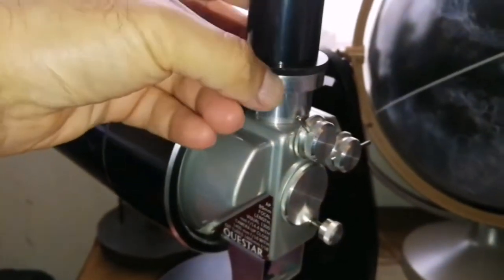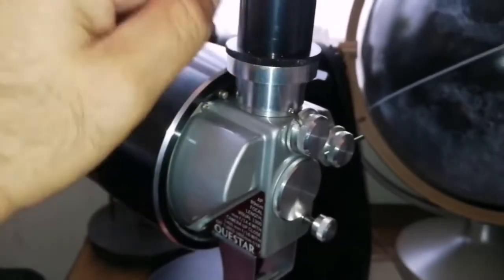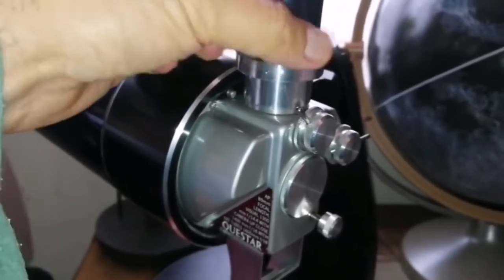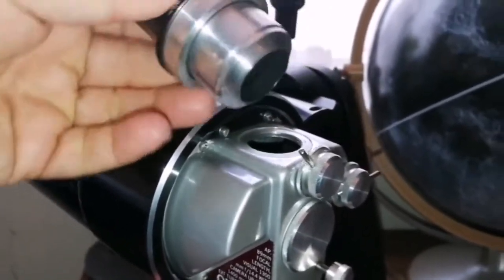So this is the Questar eyepiece holder. The eyepiece goes from here, from the black side to the top. But the eyepiece holder is this one that I'm unscrewing, and it's coming out. It came out.